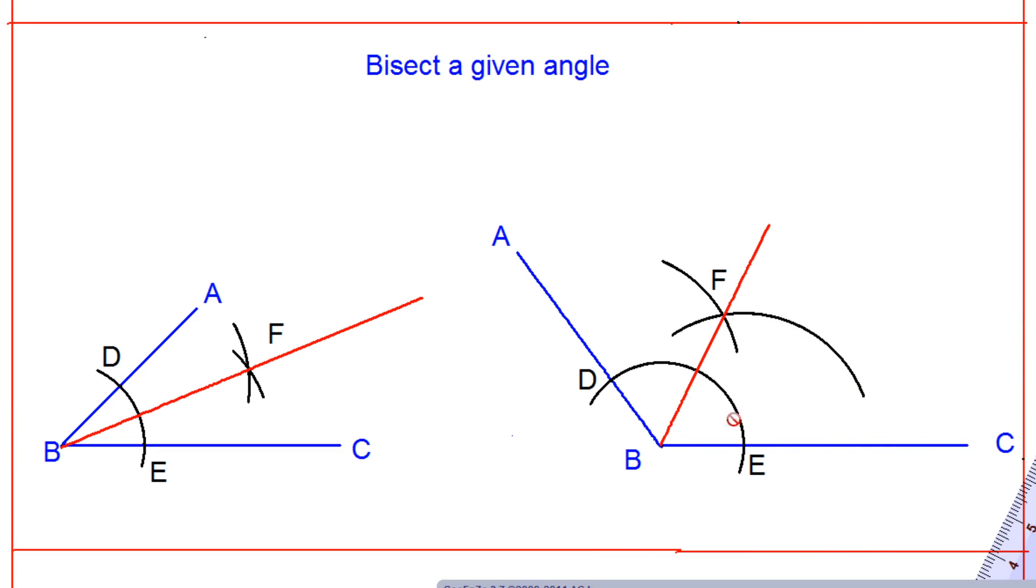So the line BF has divided the angle ABC into two equal parts. That means what you can say - ABF is equal to CBF. Or here also, ABF is equal to CBF. This is the simple method by which we can bisect a given angle.